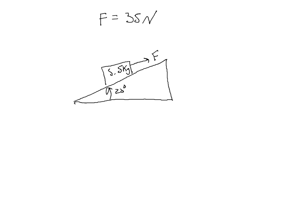This is an example problem, problem number two from the Newton's Second Law homework. In this problem, we have a block that's being pulled up a 23 degree incline. The mass of the block is five and a half kilograms, and it's being pulled up the incline by a 35 Newton force. In the first part of the problem, we're to find the acceleration of the block if there is no friction between the block and the incline.